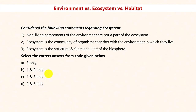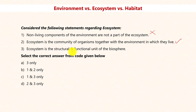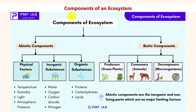Consider the following statements regarding ecosystem. First: 'Non-living components of the environment are not part of the ecosystem' — wrong, because an ecosystem has both biotic and abiotic components, though biotic components are the most important. Second: 'Ecosystem is the community of organisms together with the environment in which they live' — correct. Third: 'Ecosystem is the structural and functional unit of the biosphere' — also true; sometimes 'biosphere' is mentioned as 'nature.' The answer is D.